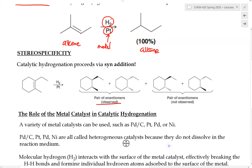The reaction proceeds in a syn addition. Syn means the same — in this case, same side. So the two hydrogen atoms in the course of the reaction are being added to this carbon-carbon bond, and the hydrogens are added to the same side of this double bond. It can be added to the top face or the bottom face, but the two hydrogens must be added to the same side — not one on top and the other on the bottom.